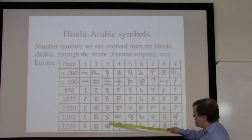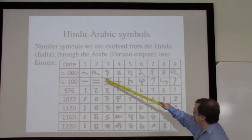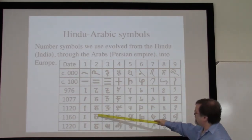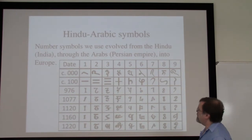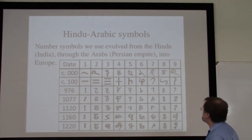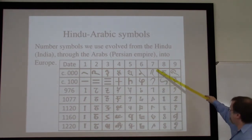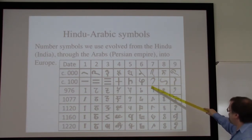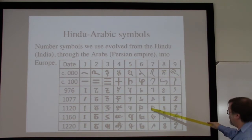This happens fairly regularly — we see this has been rotated from what we would think of as three horizontal lines to more or less three vertical lines. I hope you notice that the number two is also essentially in most of these instances rotated from the form that we would use. Some of these number symbols have stayed quite constant over time. Seven has a big loop and a stick, then turns into a different loop and a stick, and then simplifies to the seven we're used to.